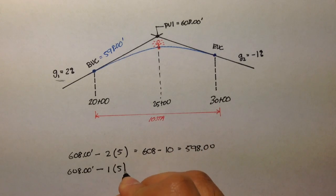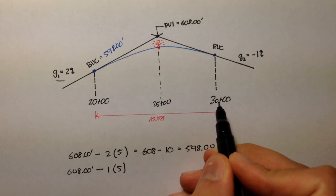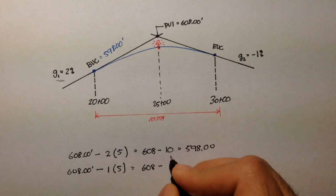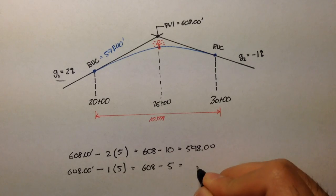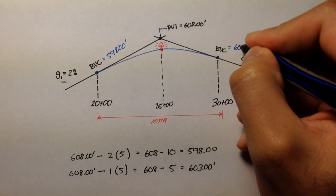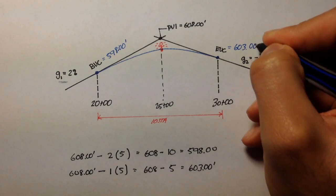You have 1% grade, and you also have a distance of 5 stations here. So, 608 minus 5 is equal to 603. So, the elevation of EVC would be 603.00.